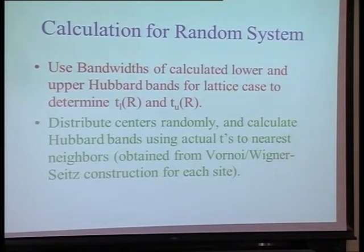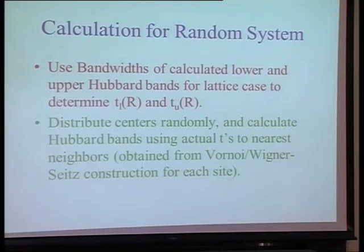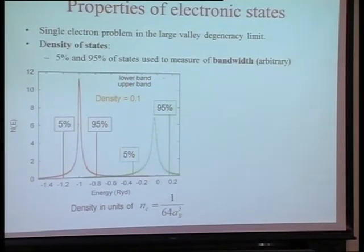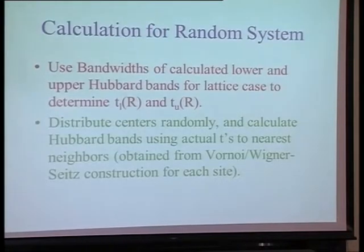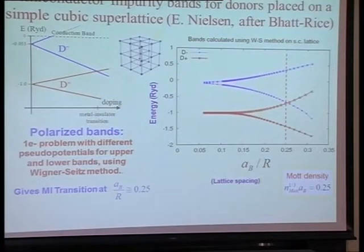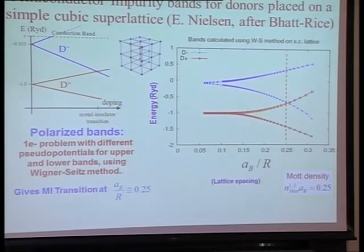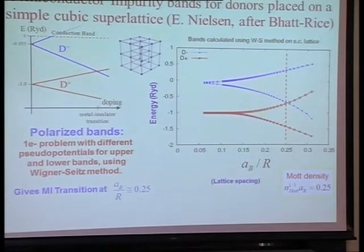Most of the calculations we did for the magnetic problem were in two dimensions, but here he actually did a three-dimensional calculation of the density of states. And what you find is, and what you can show, is that in the large valley degeneracy limit, when you don't have to worry about exchange issues, because the electron in the upper Hubbard band is normally in a different valley and different spin state than the one in the lower one.